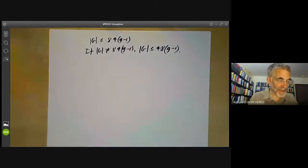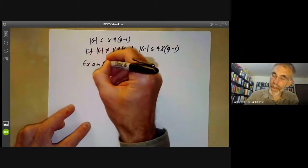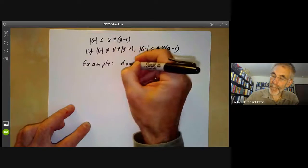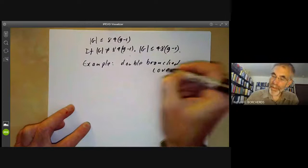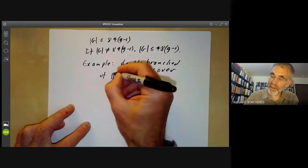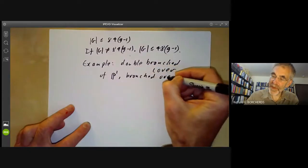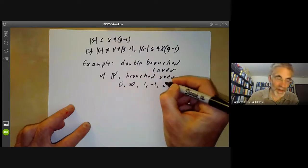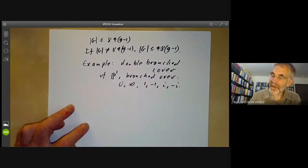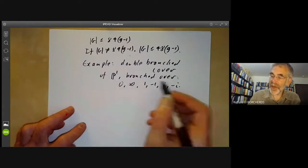And in fact there is a curve of this order, and we can take the double branched cover of the group P^1 branched over the following six points: zero, infinity, one, minus one, i, minus i.